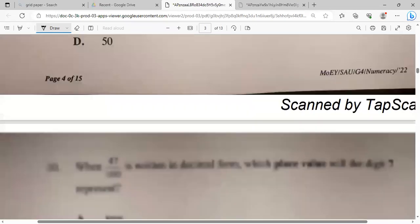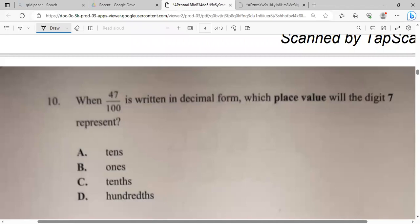When 47 over 100 is written in decimal form, which place value will the digit 7 represent? So first you have to convert the 47 over 100 to a decimal. So we'll move the decimal place two times to our left. One, two, so that will be 0.47. Now they did ask what is the value of the digit 7. So this will be four tenths and this will be seven hundredths, as it's two place from the decimal point.